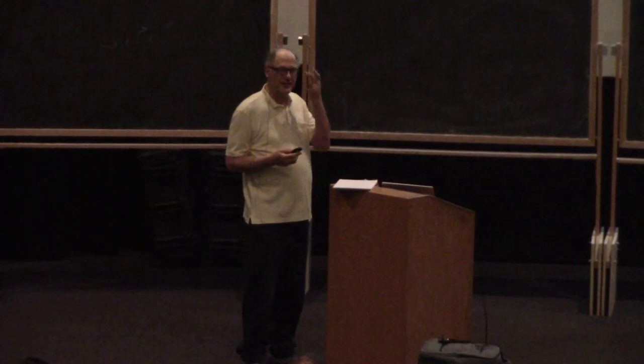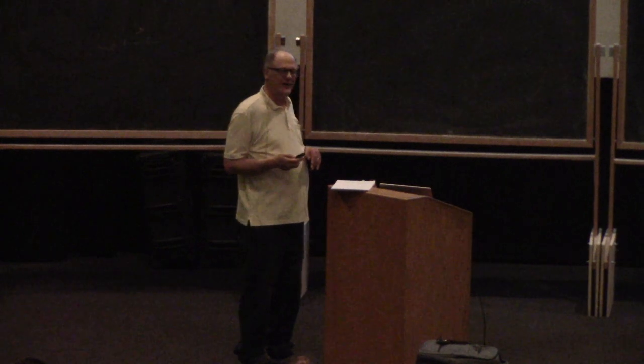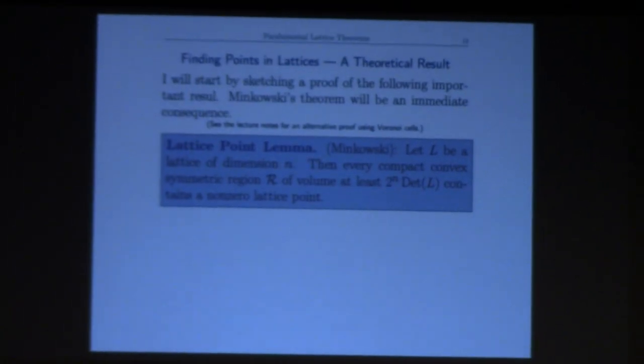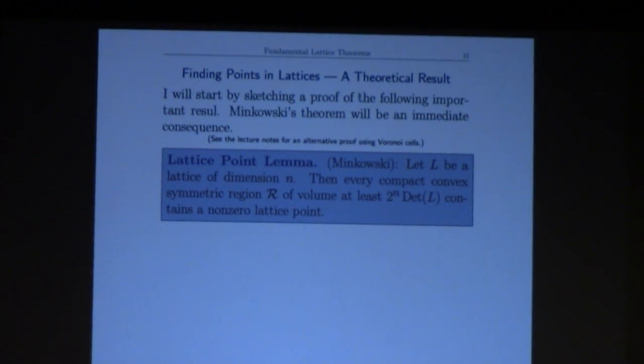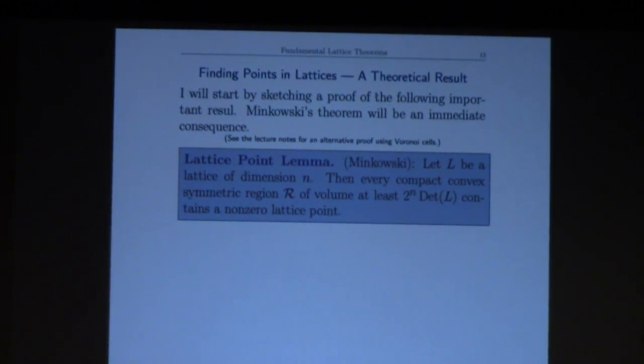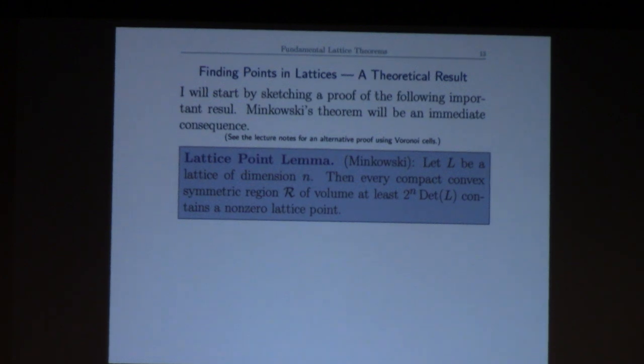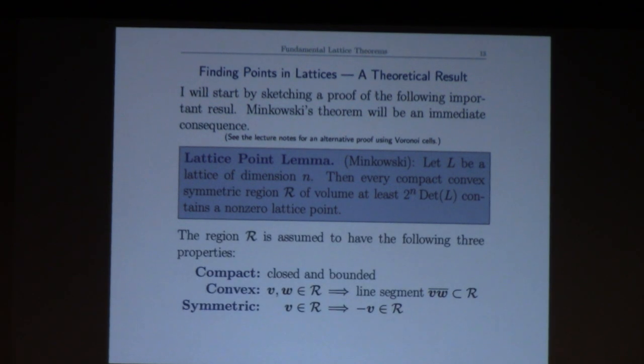And I want the blob to be fairly big, so it has volume at least two to the n times the volume of the fundamental domain. So that's a lot of conditions but we get a pretty nice conclusion out of it, namely that it then contains a non-zero lattice point. This is one of those magic theorems that you feed in some data - in this case about the size of the fundamental domain and the size of this nice blobby region - and it magically produces a point for you.